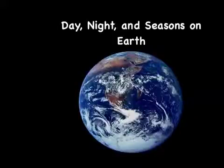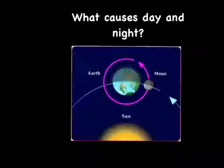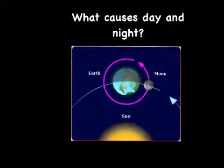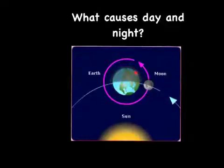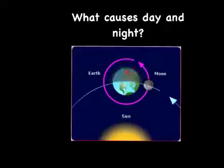Today's lesson deals with why we have day and night on Earth and why we have seasons. What causes day and night? Day and night is caused because the Earth is rotating on its axis counterclockwise. The part of the Earth that is facing the sun has daytime, and the part that is pointed away from the sun has nighttime.